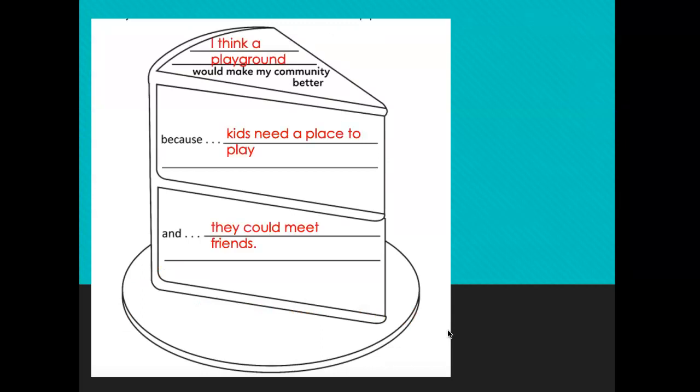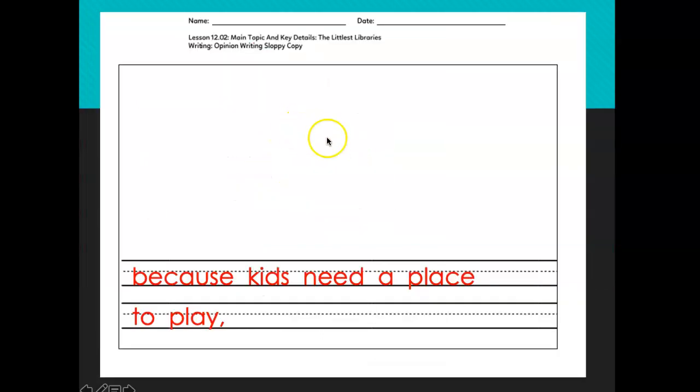So then for my graphic organizer, for my second page, I'm going to write my reason, my first reason, just like it is here on this graphic organizer. That's why this makes it so much easier. So my second page, I'm going to write my reason: because kids need a place to play. Here it is my next page: because kids need a place to play.